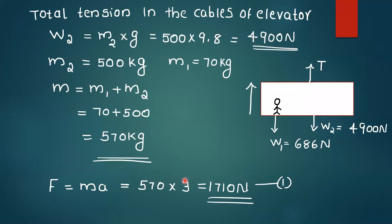Next, for the total tension in the cables of the elevator, we have to consider the total tension T. We have the weight of the elevator at 500 kg. Converting: 500 into 9.8 equals 4900 Newton. So we apply F equals M times a.